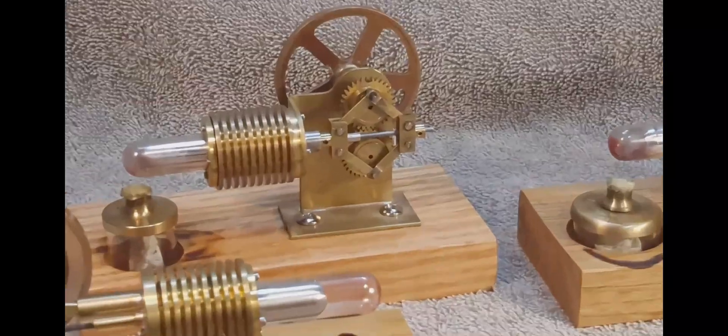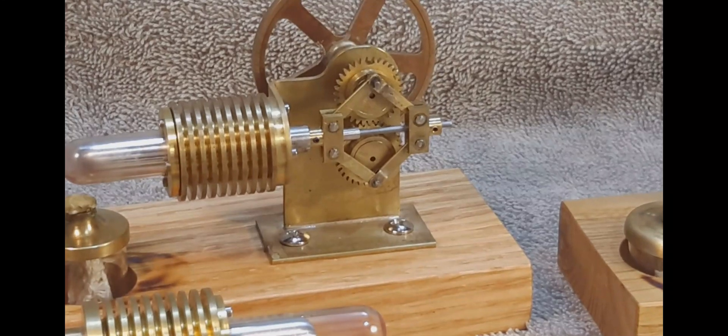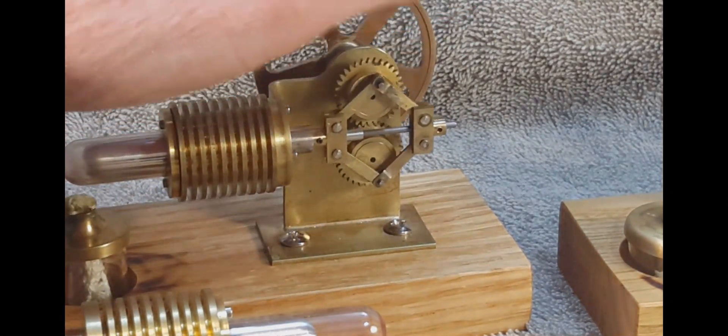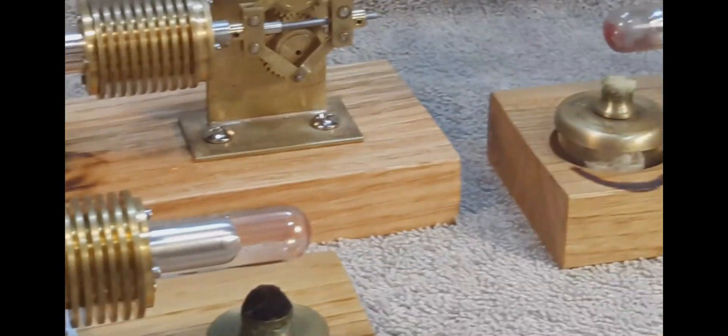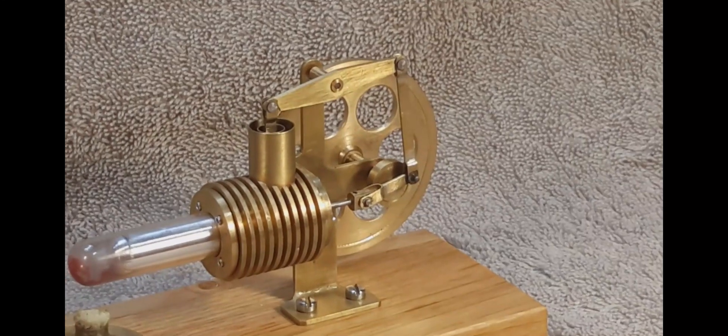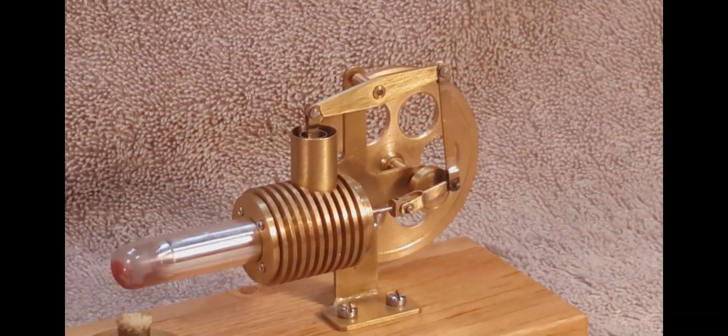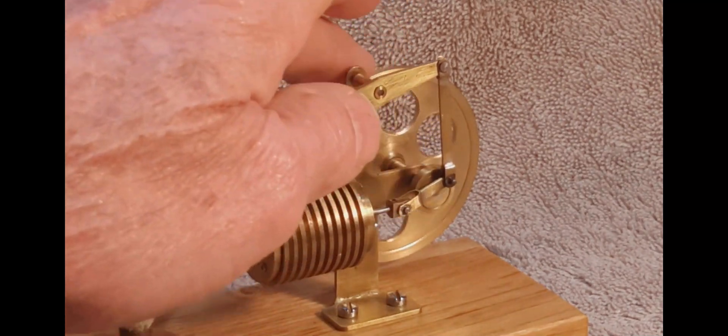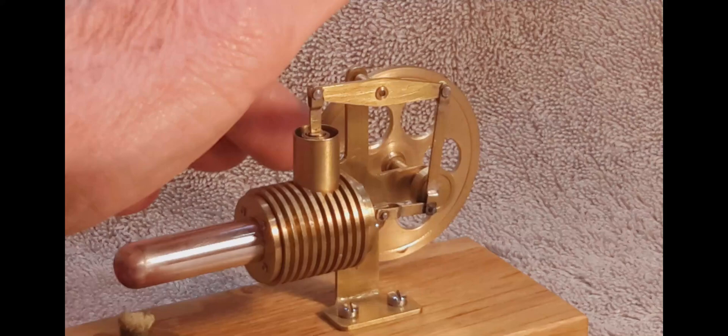This one in the back here is called a rhombic drive, and this one here, the power piston and the displacer are at right angles, and it utilizes what is called the bell crank.